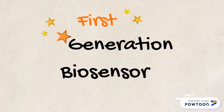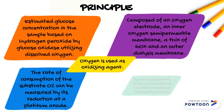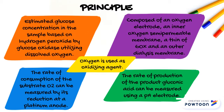First generation biosensor: the estimated glucose concentration in the sample is based on hydrogen peroxide produced by glucose oxidase utilizing dissolved oxygen. The biosensor is composed of an oxygen electrode, an inner oxygen semipermeable membrane, glucose oxidase, and an outer dialysis membrane. Oxygen is used as the oxidizing agent. The rate of consumption of the substrate can be measured by its reduction at a platinum anode. The rate of production of gluconic acid can be measured using a pH electrode.